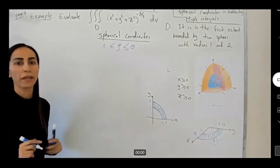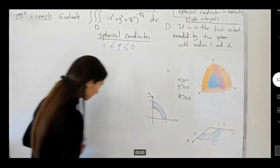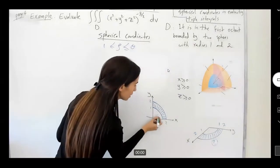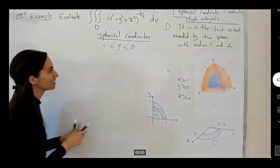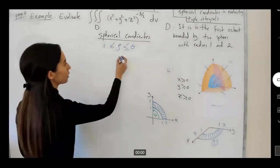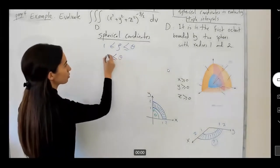How about your theta? Theta in the x-y plane ranges between zero and it stops at pi over two. This is your theta, zero to pi over two.